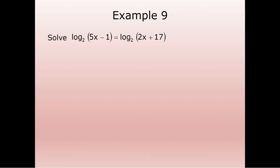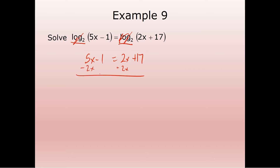Let's do a couple so we can see it in action. Log base two of five X minus one equals log base two of two X plus 17. How many logs do we have? Two logs, no constants — we can use the equivalence property. Log two equals log two, so we ignore that and just set the arguments equal. Subtract two X: three X minus one equals 17. Add one: three X equals 18. Divide by three: X equals six.